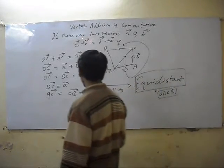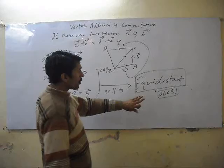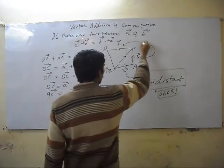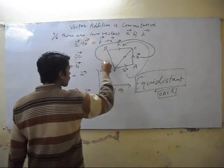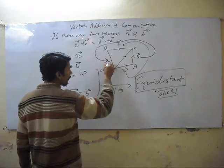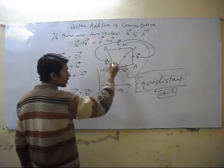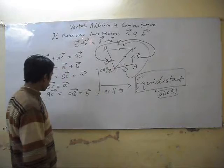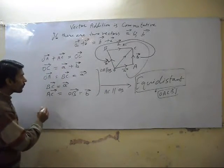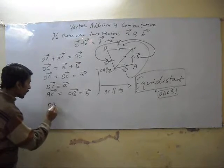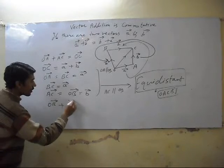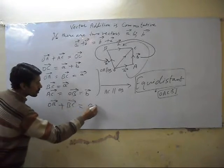So if these are equidistant, then B vector is also here in the same direction. So we can say